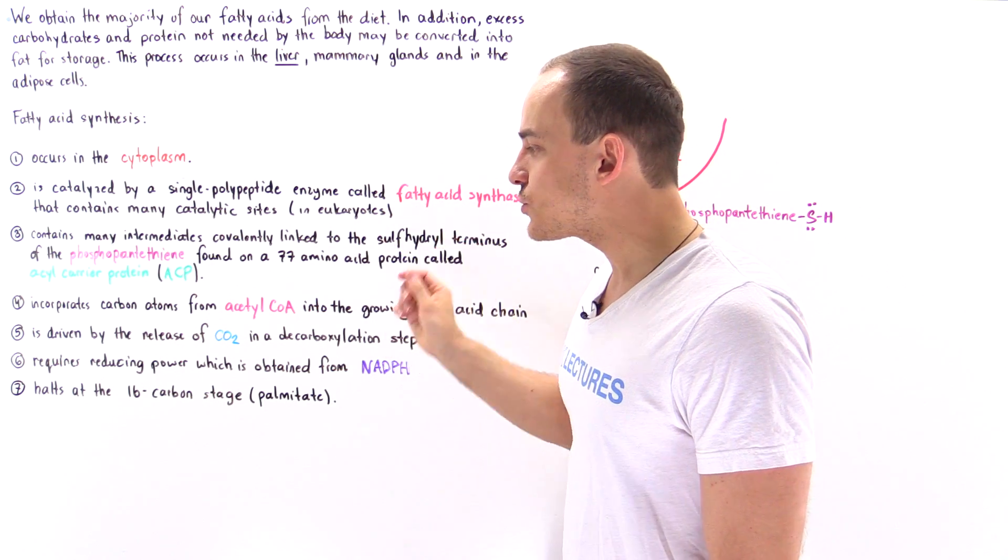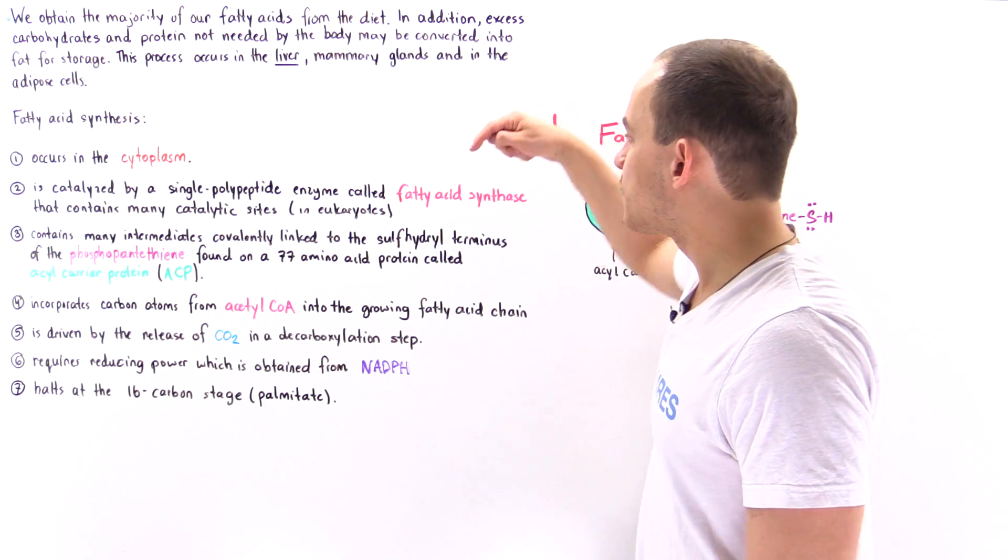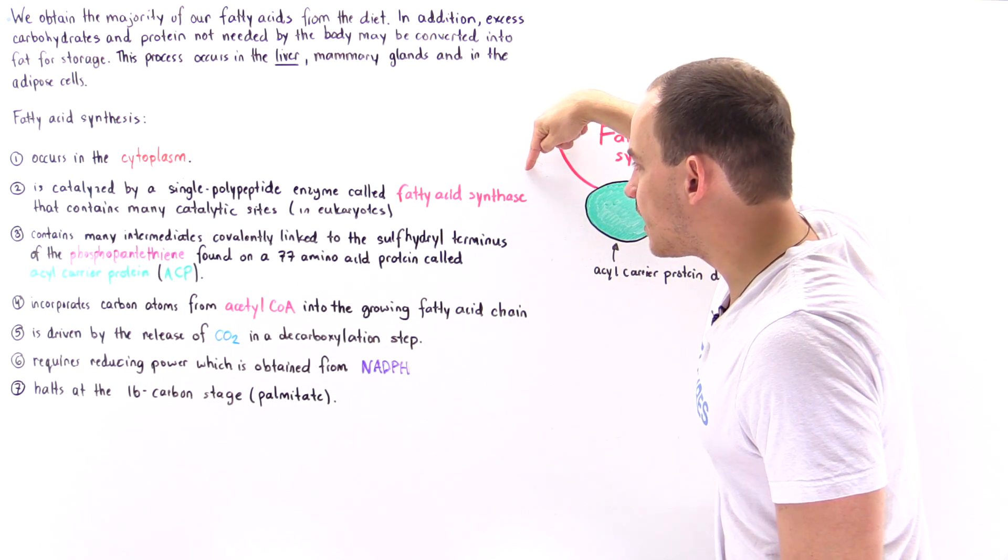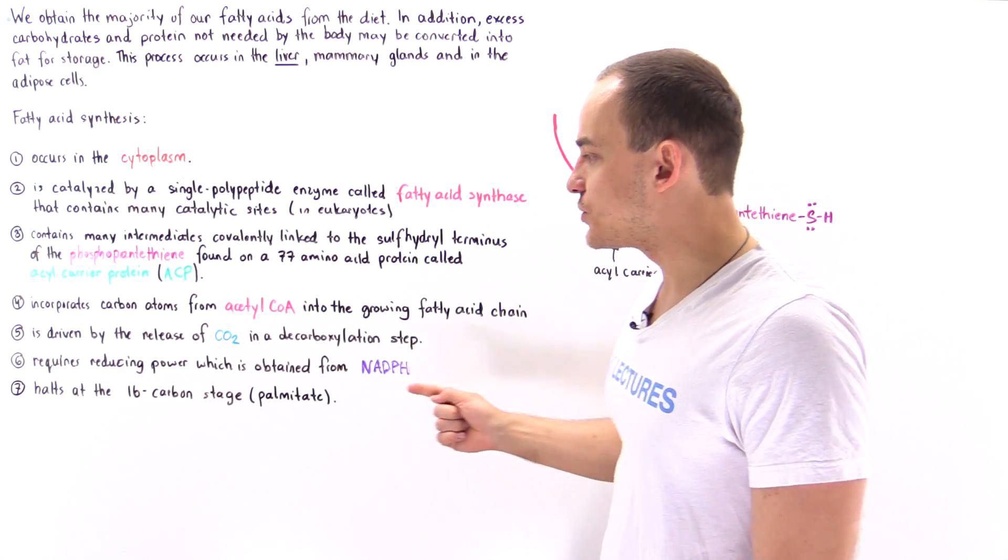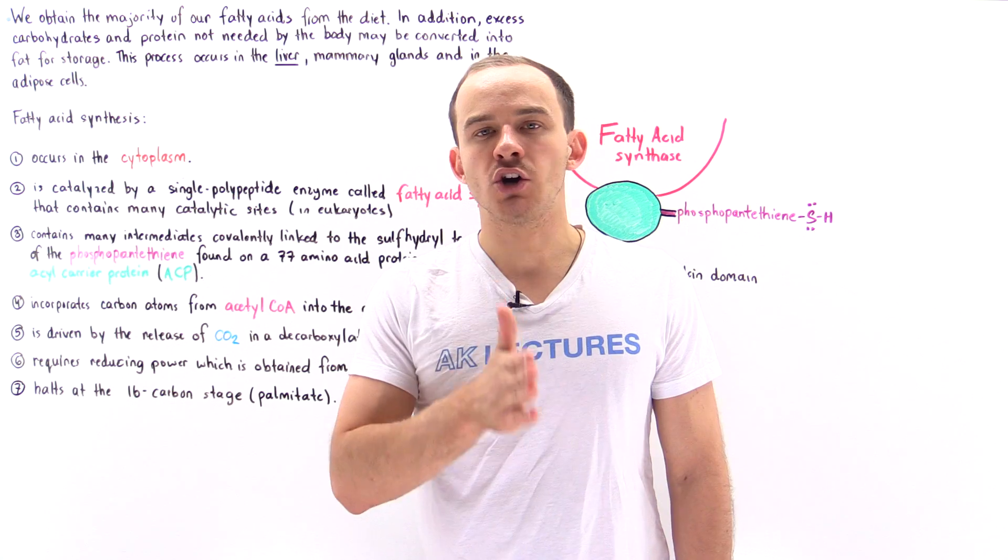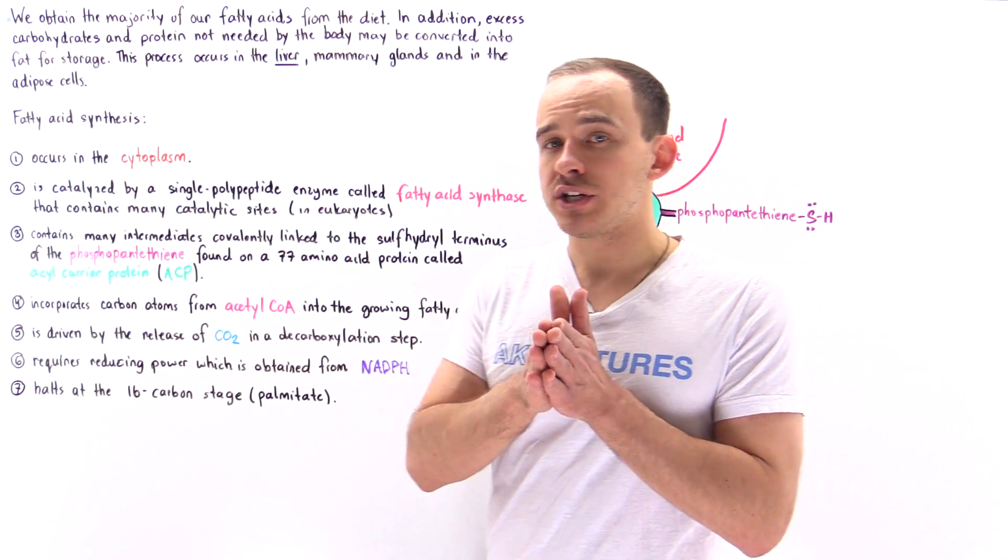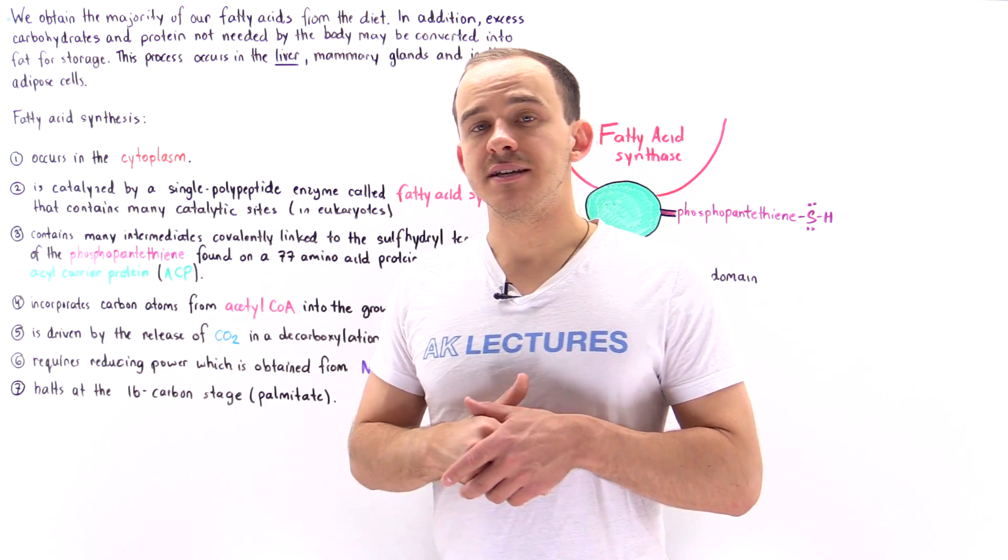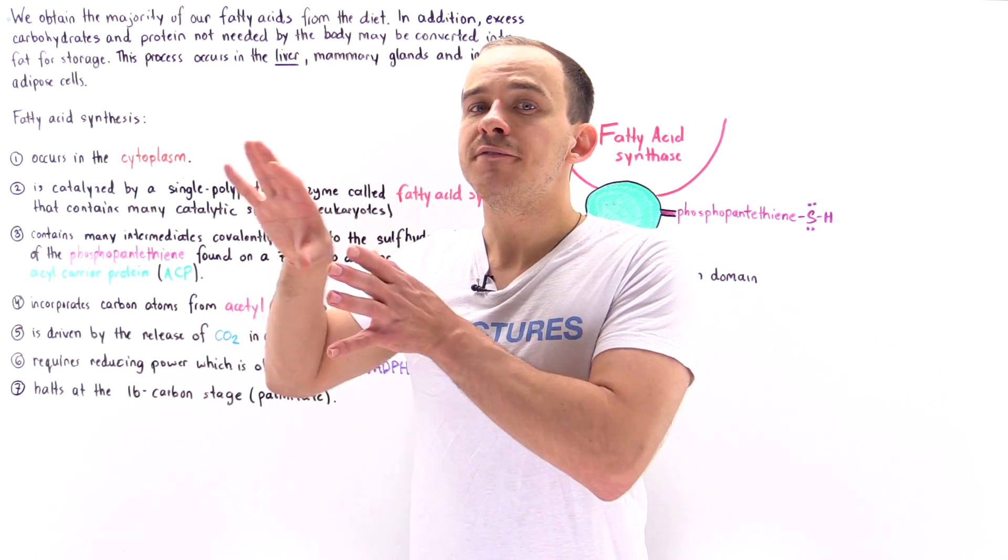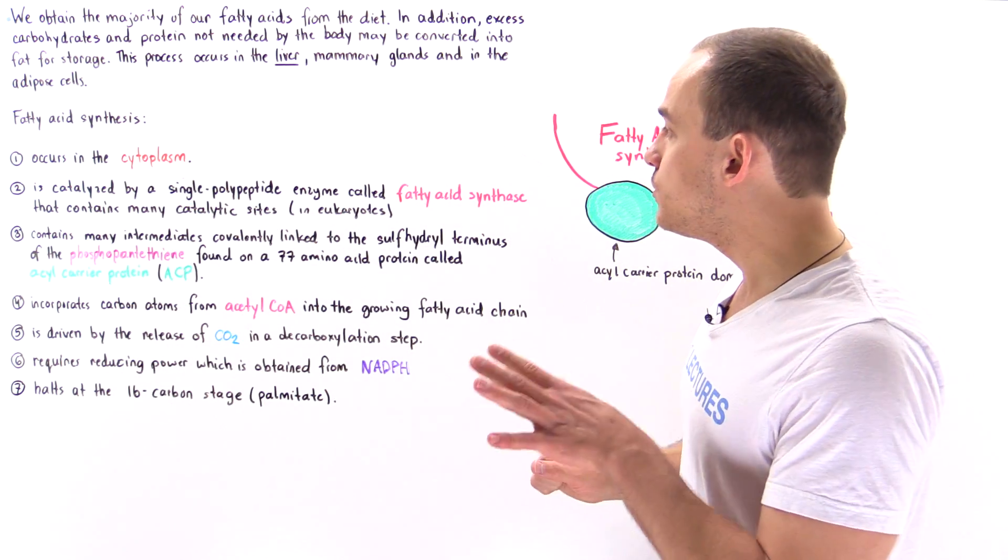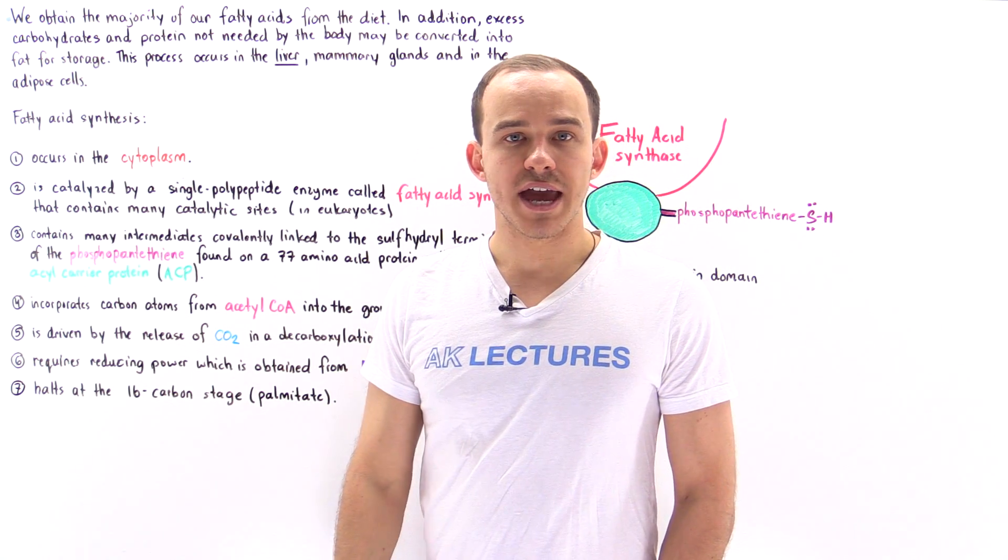Fatty acid synthesis actually stops at the 16 carbon stage, the palmitate stage. So our fatty acid synthase will essentially stop the process of producing those fatty acids once we form a 16 carbon molecule. Now, once we form that 16 carbon molecule, we can actually elongate that 16 carbon molecule or we can even add double bonds. But this happens at a different site in the cell and it uses different enzymes that are not the same as the fatty acid synthase.